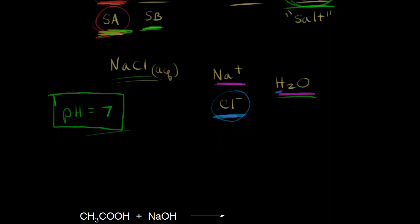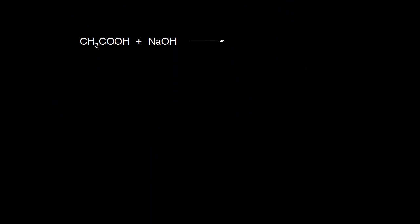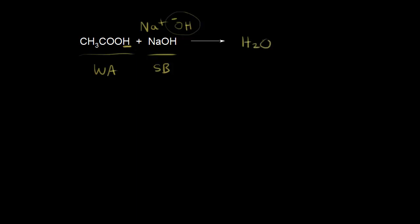Let's compare this to the salt formed from a weak acid and a strong base. Here we have acetic acid, which is a weak acid, and sodium hydroxide, a strong base. In solution we have Na+ and OH−. Hydroxide takes the acidic proton from acetic acid — H+ and OH− give us H2O. Taking a proton away from acetic acid leaves us with acetate, CH3COO−. The sodium ion ionically bonds with the acetate anion to form sodium acetate.